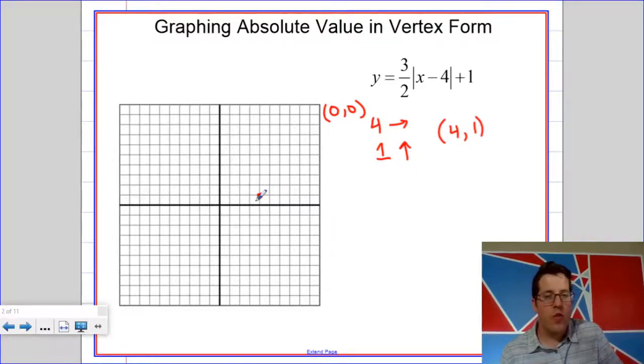Then the way that the steepness is going to work is that we are going to think of that the same way that we think of slope. So up three, right two, up three, right two, up three, right two. But a vertex is a turning point. So all of the points to the left of the vertex are up three, back two, up three, back two.